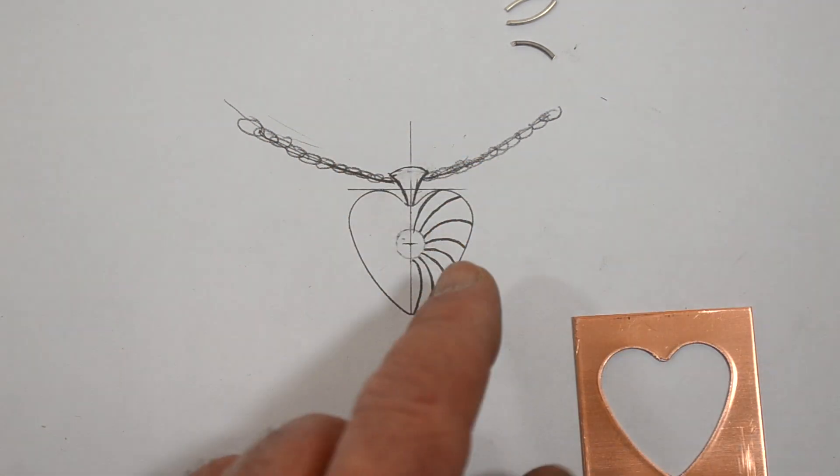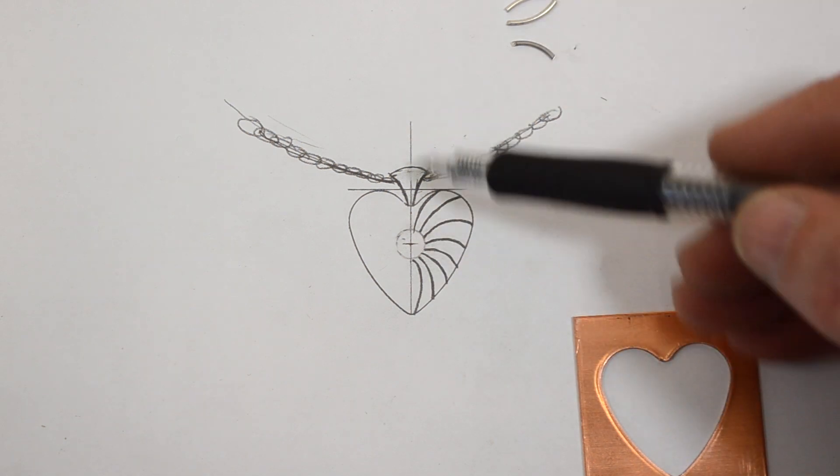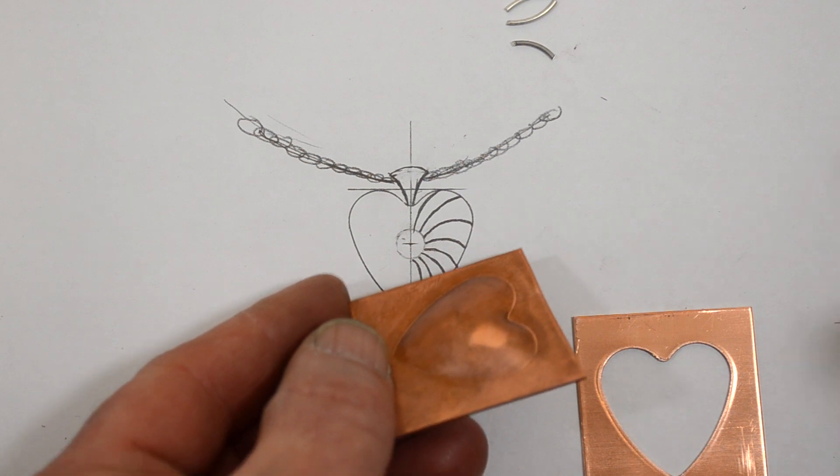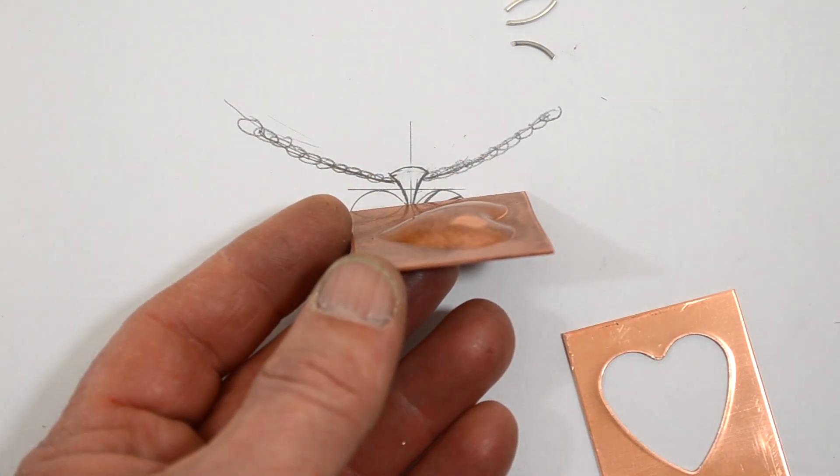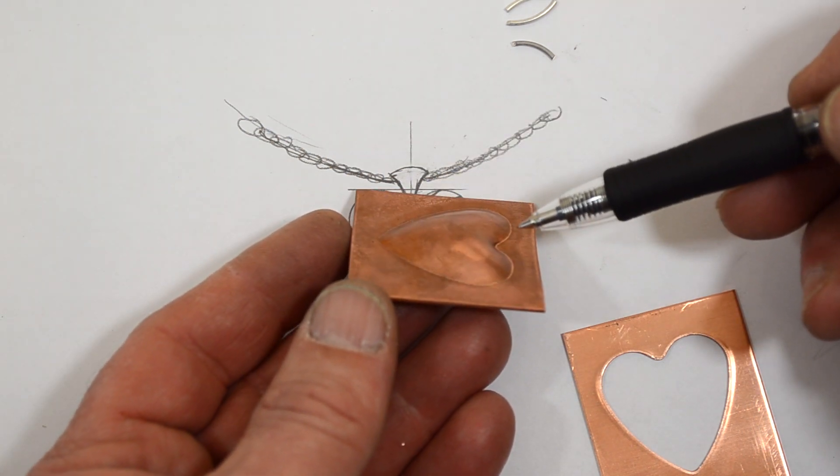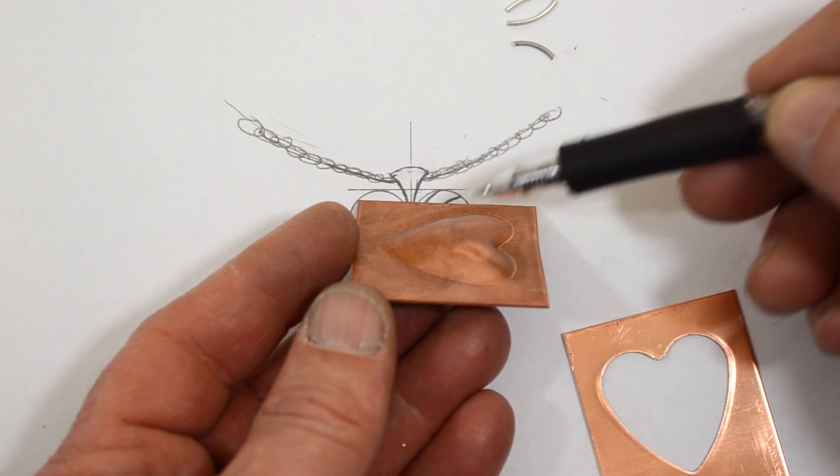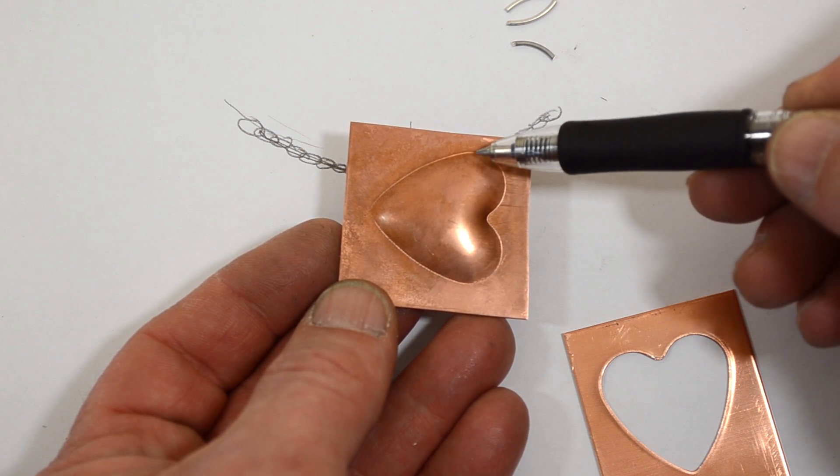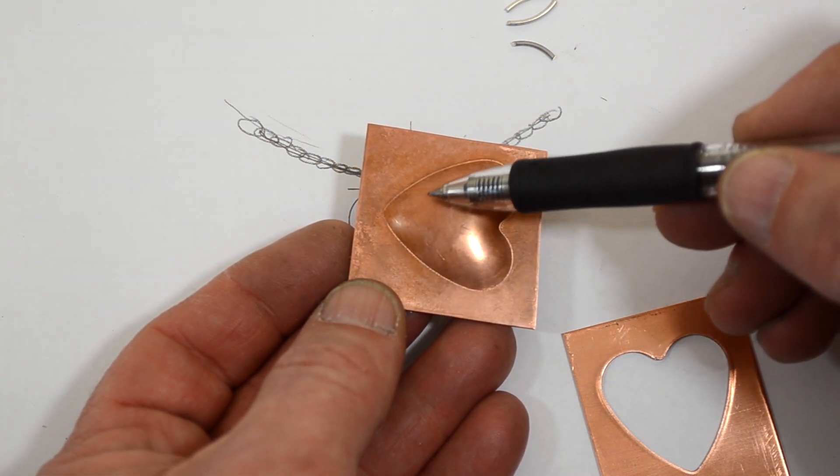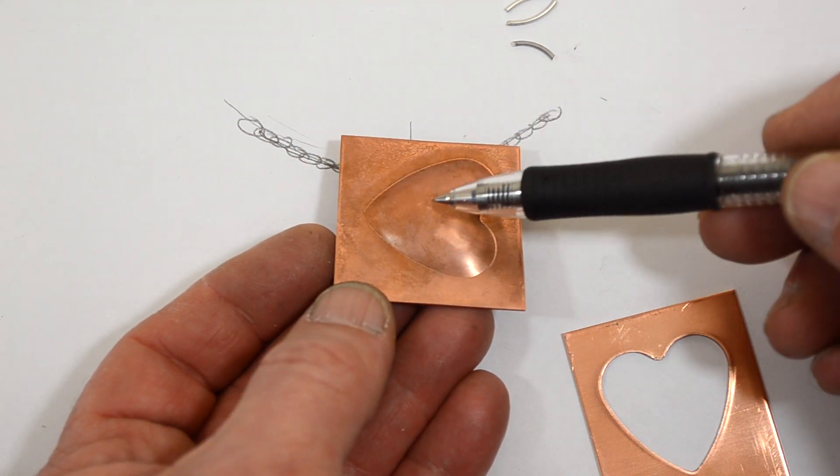So I traced my shape. I found where my stone was going to sit and it's not exactly in the center of the shape. There's a reason for that because if you look at a puffed shape the highest point of the shape is not in the center of the heart. Since there is more surface area in this part of the shape than down here, the metal moves differently and it doesn't puff as much where there's less surface area.